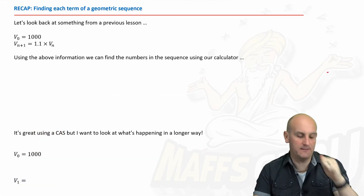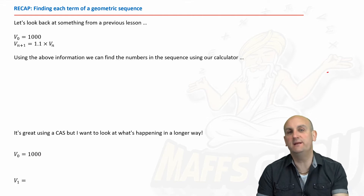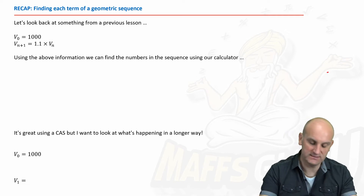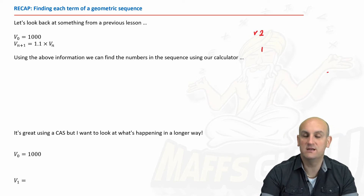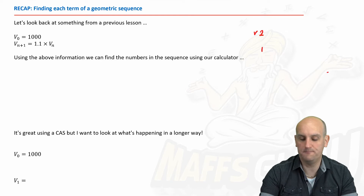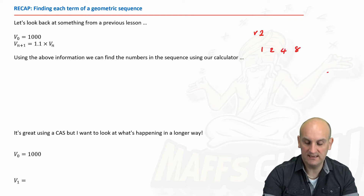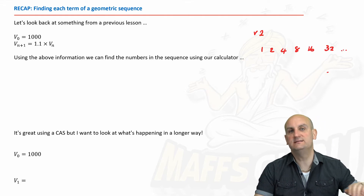Let's recap our work on geometric sequences. A geometric sequence is one where to go from one term to the next you multiply by the same thing. For example, with a times two rule and a first term of one: you double to get two, double again to get four, and again and again. You can see the sequence is getting bigger.